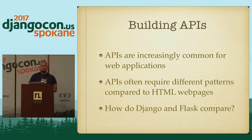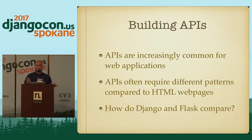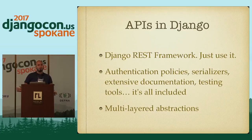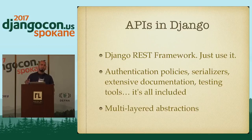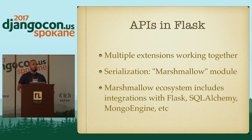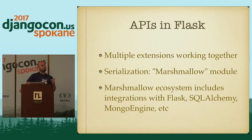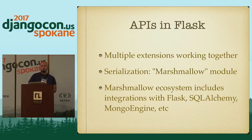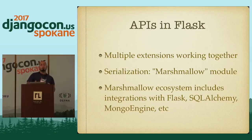Another thing that a lot of websites need is APIs — they're increasingly common for web applications and have different usage patterns compared to HTML web pages. With Django, you want to use Django REST Framework — it's great, with multi-layered abstractions so you can choose which layer to work with, tons of documentation, and it works great. What about with Flask? As you might imagine, you use multiple different extensions working together. With Django REST Framework, the serializer forms the core of how your API is structured. In Flask, you'd probably use the Marshmallow module, which is a serializer framework with integrations for Flask, SQLAlchemy, MongoEngine, and more.